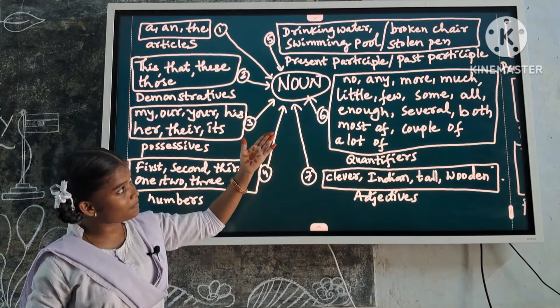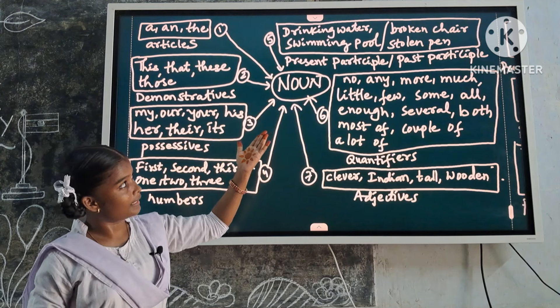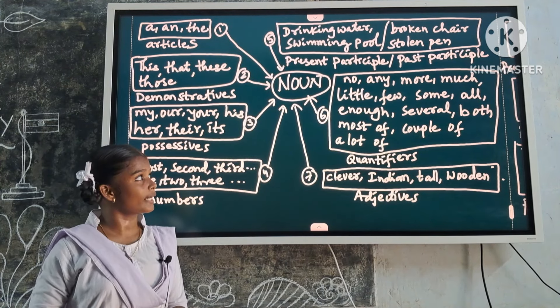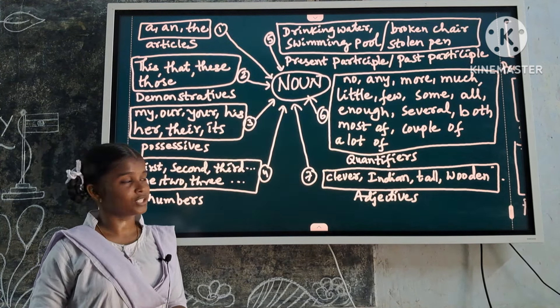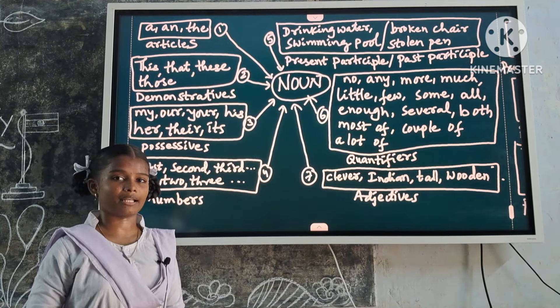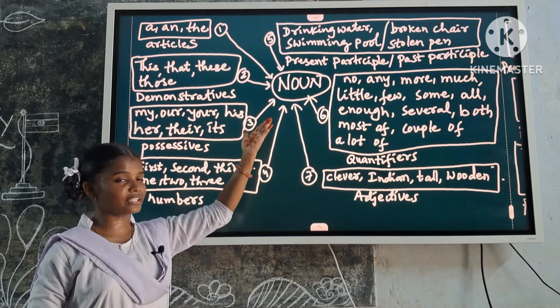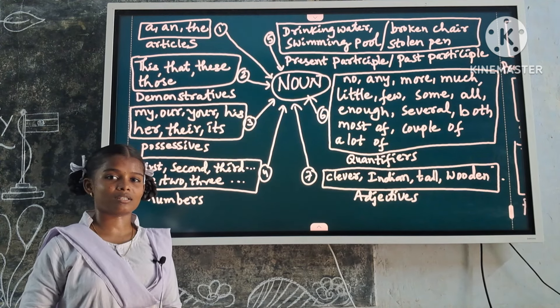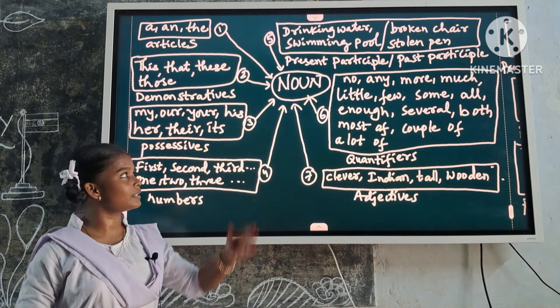Next one: past participle. Examples: broken chair, stolen pen. These are noun modifiers because they describe the noun.